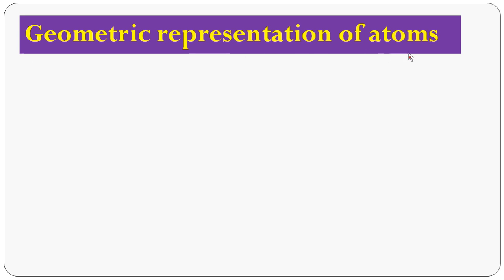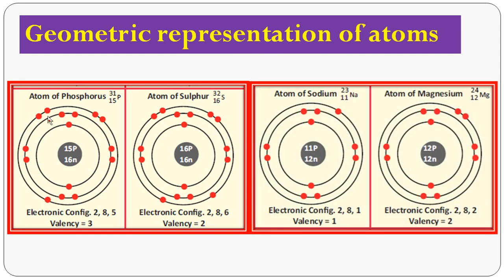Now, geometric representation of atoms of some elements — phosphorus P, sulfur S, sodium Na, and magnesium Mg. For phosphorus: atomic number 15, mass number 31. Electronic configuration: 2, 8, 5. The nucleus contains 15 protons and 16 neutrons. First shell: 2 electrons; second shell: 8 electrons; outer shell: 5 electrons. To find valency — more than 4 electrons means we apply the formula: 8 minus 5 = 3. So phosphorus has valency 3.